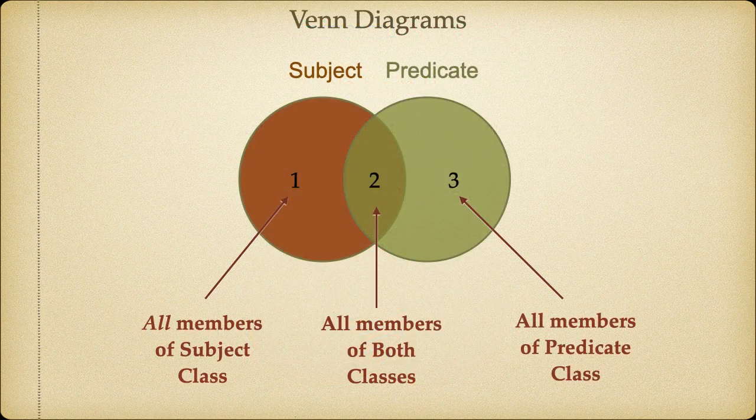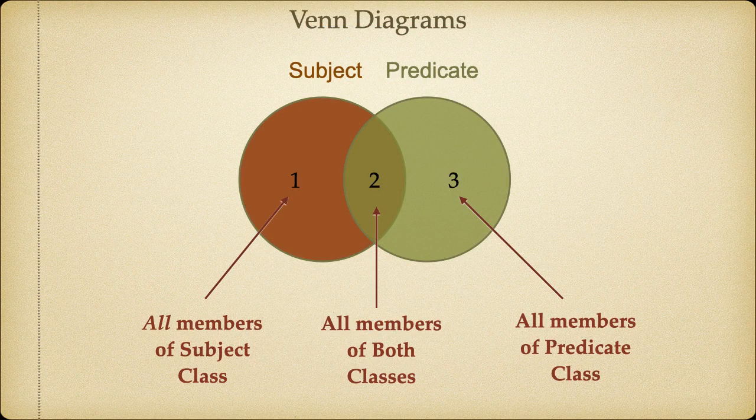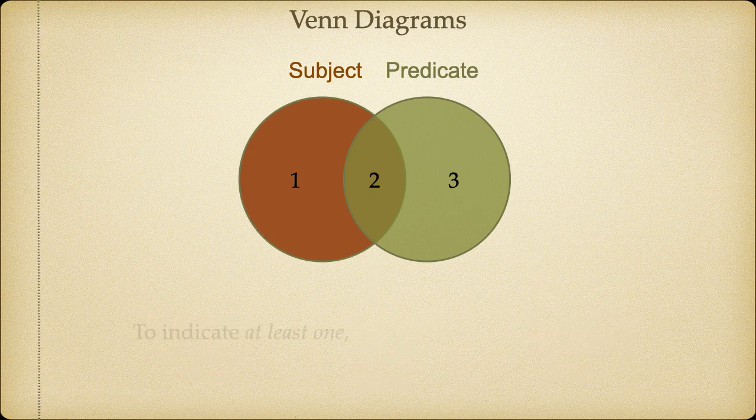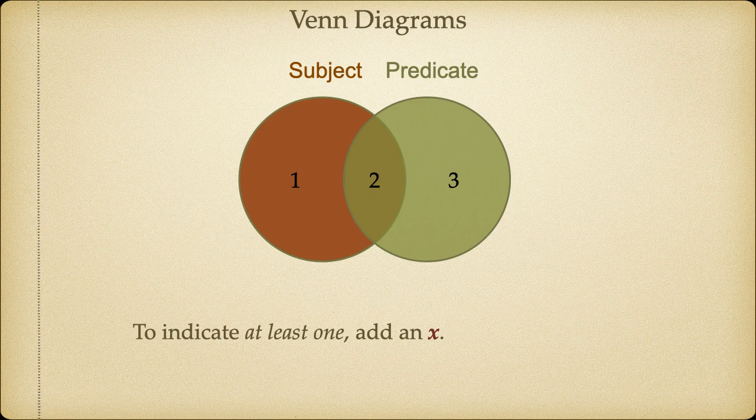When it comes to the particular affirmative and particular negative propositions, we have to treat our diagrams a little bit differently. Shading is fine for universal claims, but since shading eliminates everything in a region, it's not going to work for a particular claim. A particular claim asserts the existence of some things, which we've learned means at least one thing. We'll adopt a convention. We'll use an X to mark the existence of at least one thing.